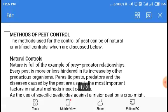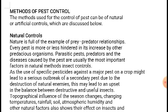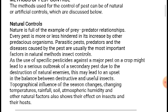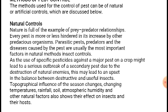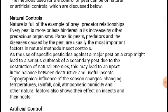Various methods are used for the control of pests — this is called pest control. Generally, two types of methods are used: natural control and artificial control. Natural control is exemplified by the prey-predator relationship. Every pest is more or less limited in its increase by other predacious organisms. Topographical influences such as temperature change, rainfall, soil, and atmospheric humidity are also part of natural control.